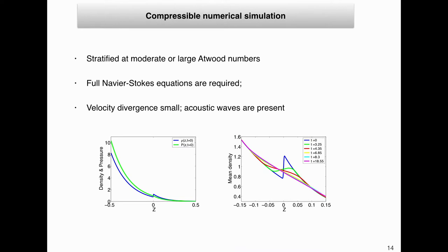Now the opposite limit: after the simplest Boussinesq model, we turn to fully compressible flow. The anelastic model is not valid for large stratification and large Atwood number, so for this regime we must use the full Navier-Stokes equations. We therefore resolve both turbulence and acoustic waves. Even in a strongly stratified configuration, the velocity divergence remains small and the turbulent Mach number remains small, but acoustic waves are present.